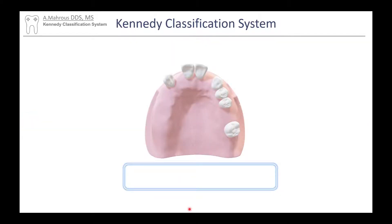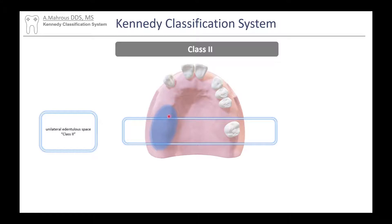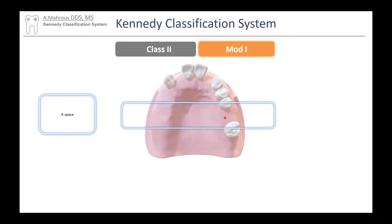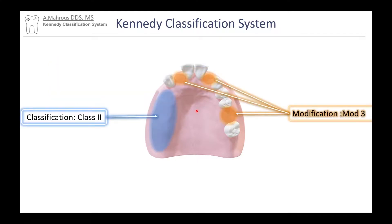Looking at this case from posterior to anterior, we see a unilateral space on one side with a molar on the other side — a space only on one side not bounded by teeth in the back, so this is a Class 2. Moving forward we see one more space — that's Modification 1. Moving further, we get two more spaces — Modification 2 and 3. So this is a Class 2 Mod 3.